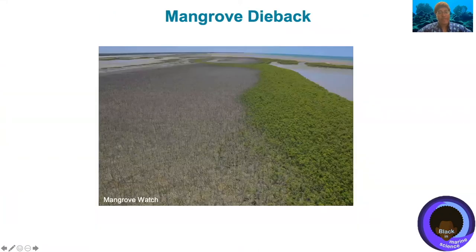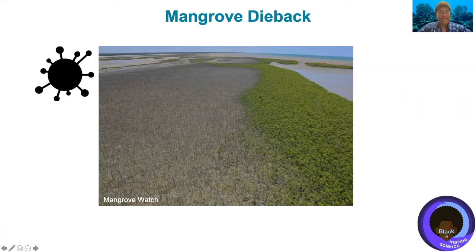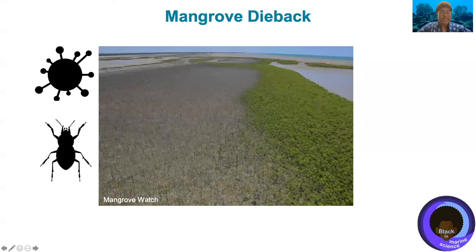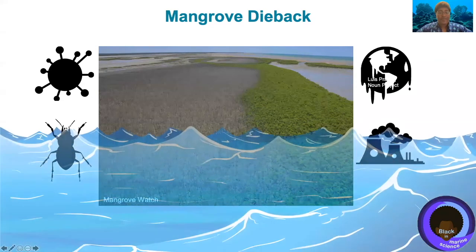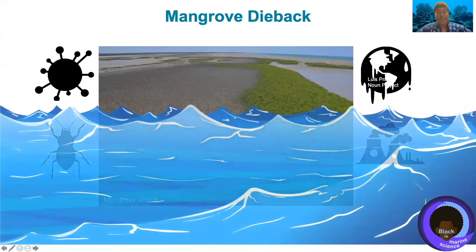Unfortunately, mangroves are beginning to die. The rate has decreased just a little bit; however, they're being affected by diseases, insects, climate change, and pollution. They're also getting affected by sea level rise.